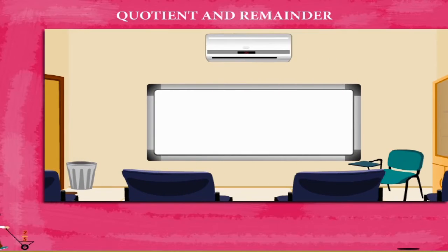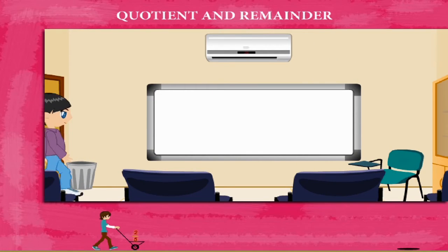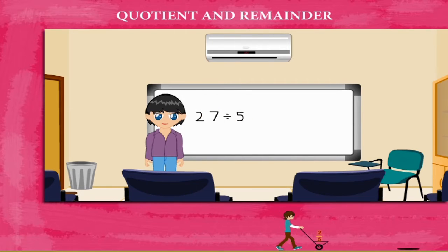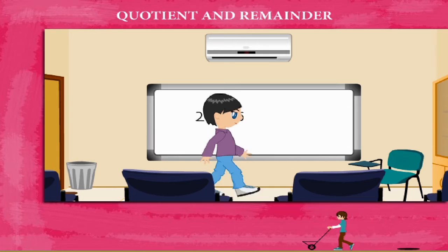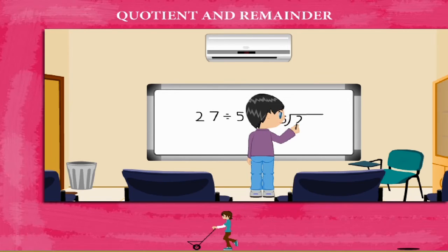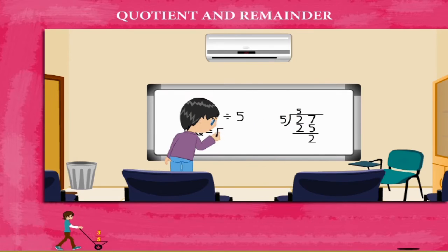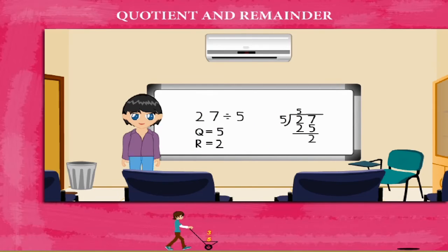Quotient and remainder. Jamie is here to divide 27 by 5. He follows the long method of division. 5 divides 27 five times, so he writes 25 below 27 and gets 2 on subtraction. Jamie's quotient is 5 and remainder 2. Good going, Jamie.